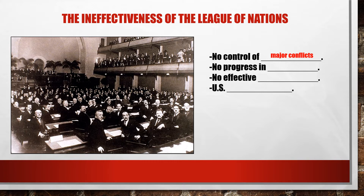If a conflict breaks out, what is the League going to do? They can issue sanctions — don't trade with this guy — but sanctions are only as powerful as the countries enforcing them. They're not helping or forcing countries to disarm. Germany is rearming in the late 20s and early 30s and the League is doing nothing about it, because they have no effective military force. They may not have known about all the armaments being built either. And of course the US, the strongest economy on the planet, is not a member.